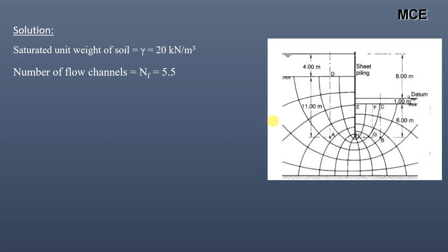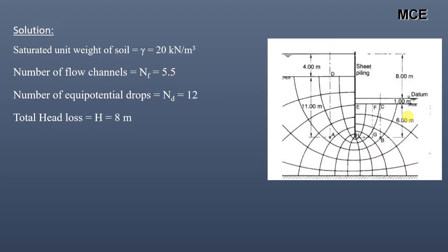The number of flow channels in the flow net are 5.5, that is 1, 2, 3, 4, 5, and 0.5 — equal to 5.5. The number of equipotential drops in the flow net are 12, that is 1, 2, 3, 4, 5, 6, 7, 8, 9, 10, 11, and 12.